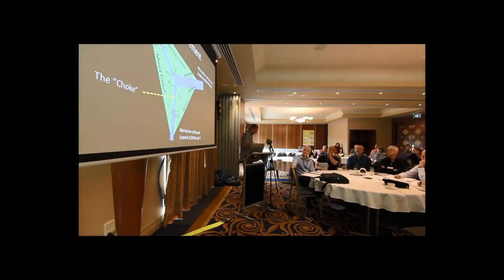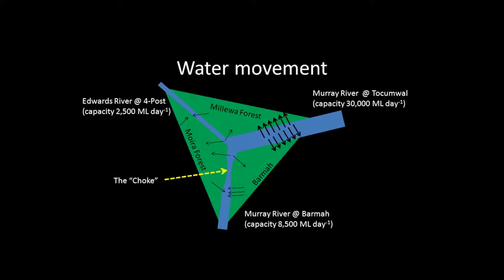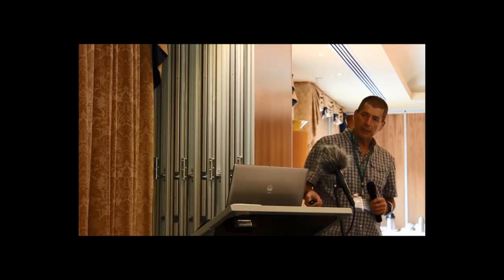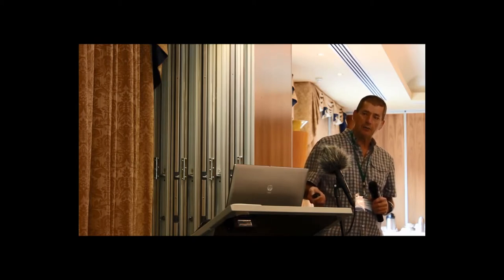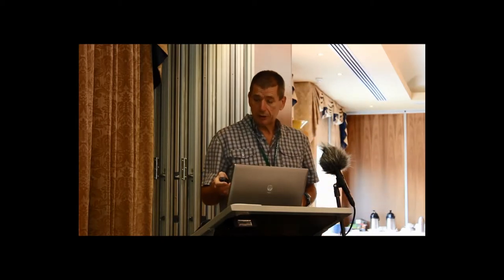This is a view of Barmah Forest from my perspective. The Murray comes in at Tocumwal with a capacity of about 30,000 megalitres a day, after which it exceeds bank and goes out onto the floodplain. Water enters the forest, with about 8,500 megalitres a day going out through the choke and a further 2,500 megalitres through the adjacent river, giving a total capacity for Barmah Forest of about 11,000 megalitres a day.